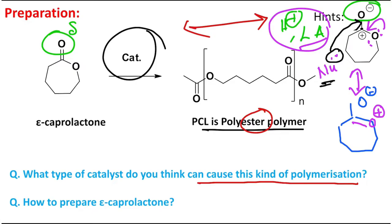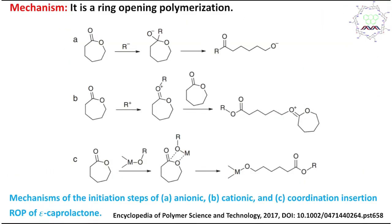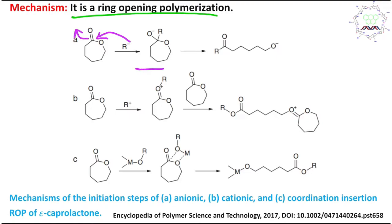How is epsilon-caprolactone prepared? Students who know name reactions should be able to answer — please pause and write in the comment box. This polymerization is a ring-opening polymerization: the ring opens to form a linear chain. For anionic initiation, an anion attacks the carbonyl, opens the ring, and produces an intermediate that propagates the chain.